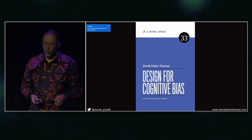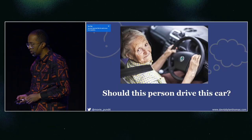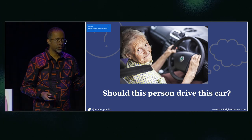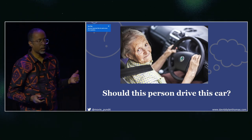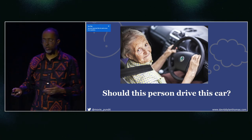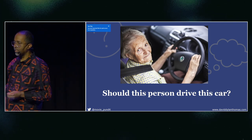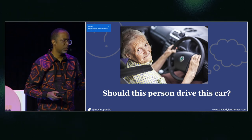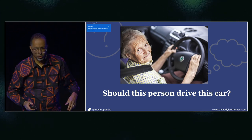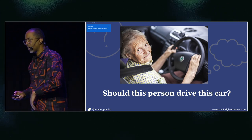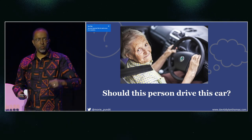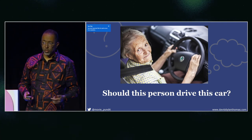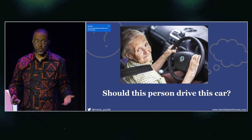I want to start by telling you about an experiment. You get an audience and show them a photo and ask, 'Should this person drive this car?' What you'll get is basically a policy debate. Some people will say old people are bad at everything, don't let them drive. Others say that's ageist, let people do what they want. All you'll learn by the end is who's on what side.